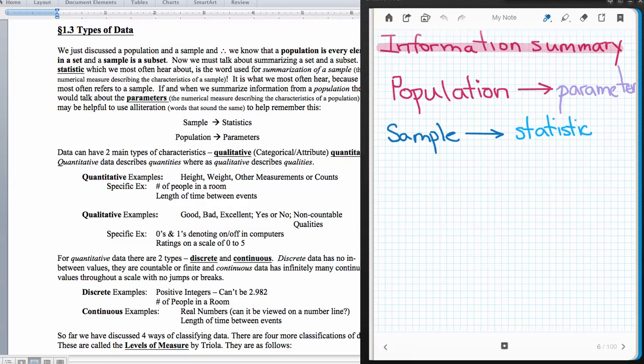This is section 1.3 of Triola's Essentials, 4th edition. In this section, we're going to first of all review the population and the sample.